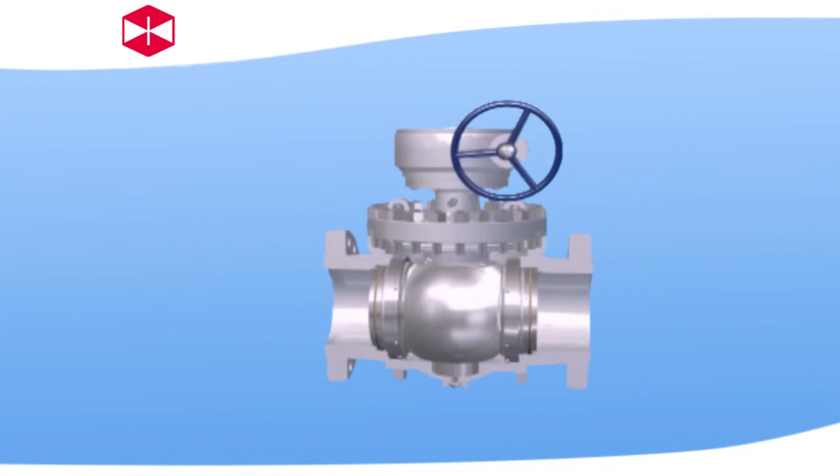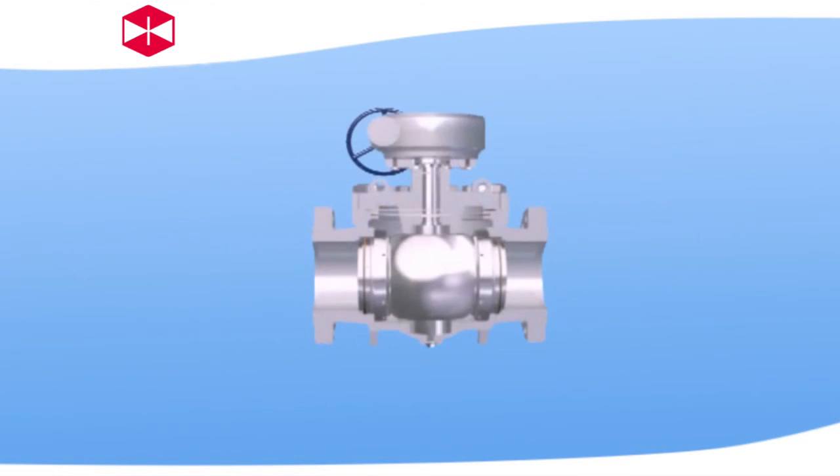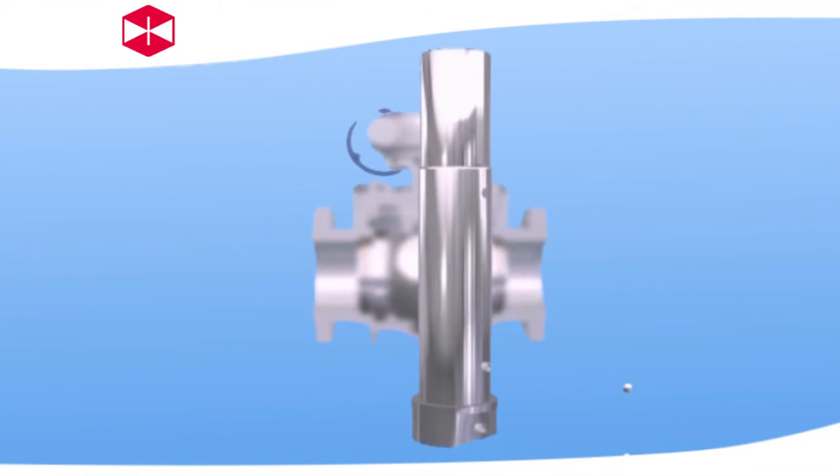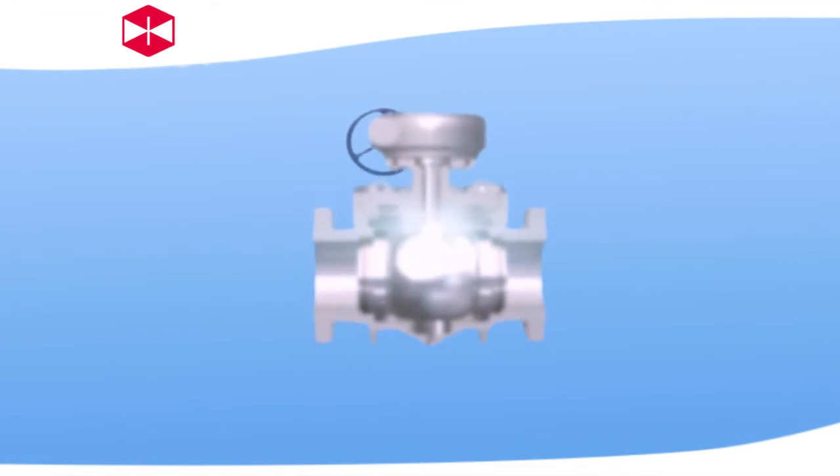Valve anti-static device. When operating the valve, the frictions between the ball and the non-metal seat reproduce electrostatic charge. But it can be accumulated on the ball to prevent static spark. An anti-static device is placed on valve to derive the electric charge accumulated on the ball from the static channel between the ball and the stem or between the stem and the body.